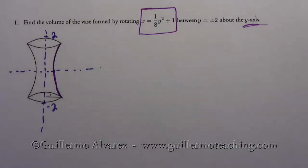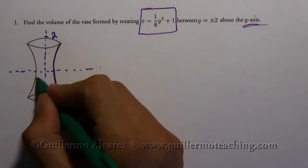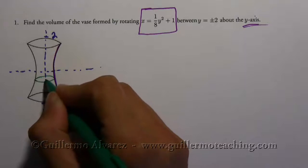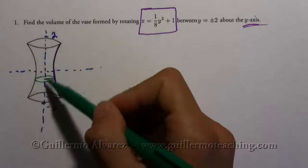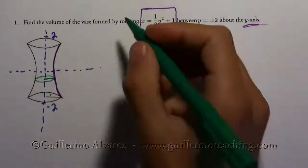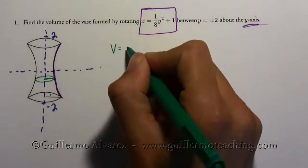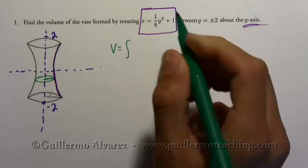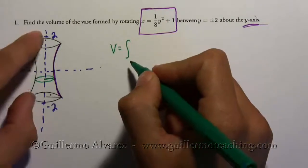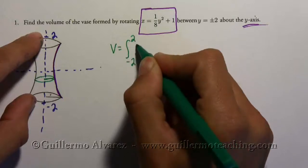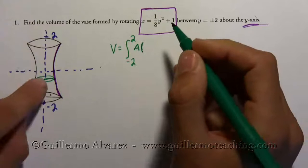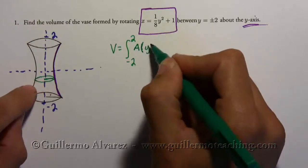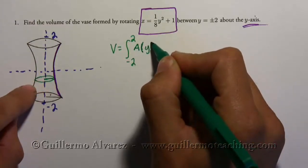And this time though, our slice is going to be perpendicular to the y-axis. And so now, when I set up my integral, I know I'm going to go from negative two to positive two, but now this time, so remember you integrate the area of the slice, but this time it's going to be with respect to y.